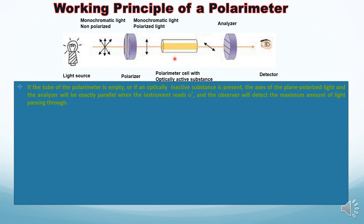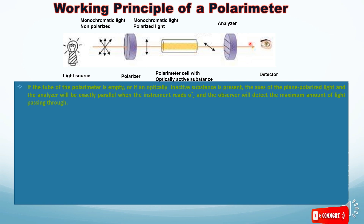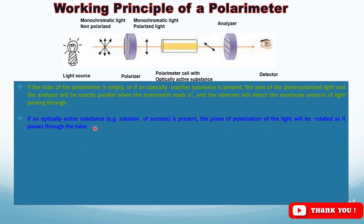If there is an optically active substance, the plane of polarized light will rotate. The observer will notice a change in light, and the detector will need to be rotated either to the right side or to the left side. If an optically active substance, for example a solution of sucrose, is present, the plane of polarization of the light will be rotated as it passes through the tube.